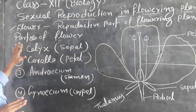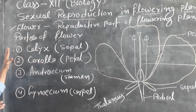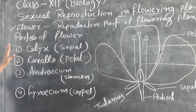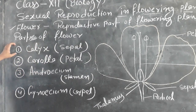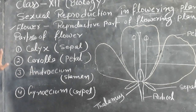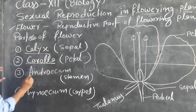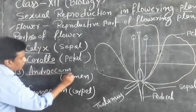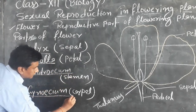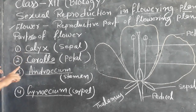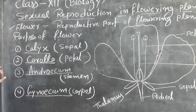There are four parts of a flower. The first part is calyx. The second part is corolla. The third part is androecium. And the fourth part is gynoecium. Calyx is the outermost whorl of the flower and it is green in color.